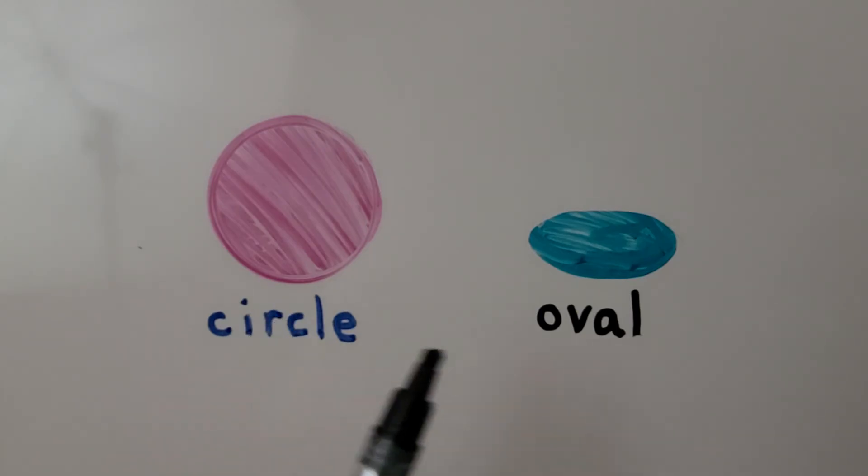This is a circle. This is an oval. An oval is a different shape than a circle.